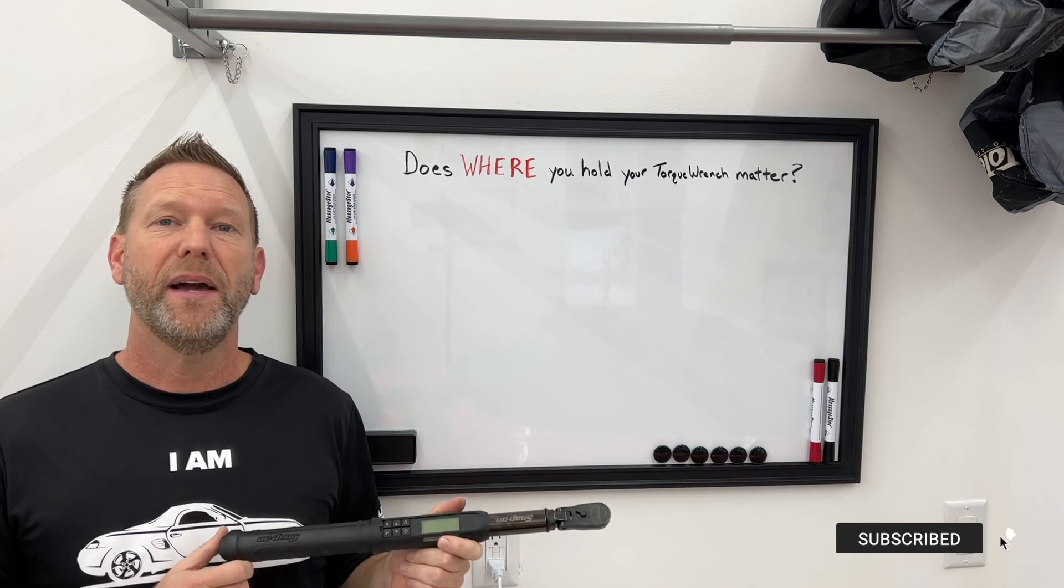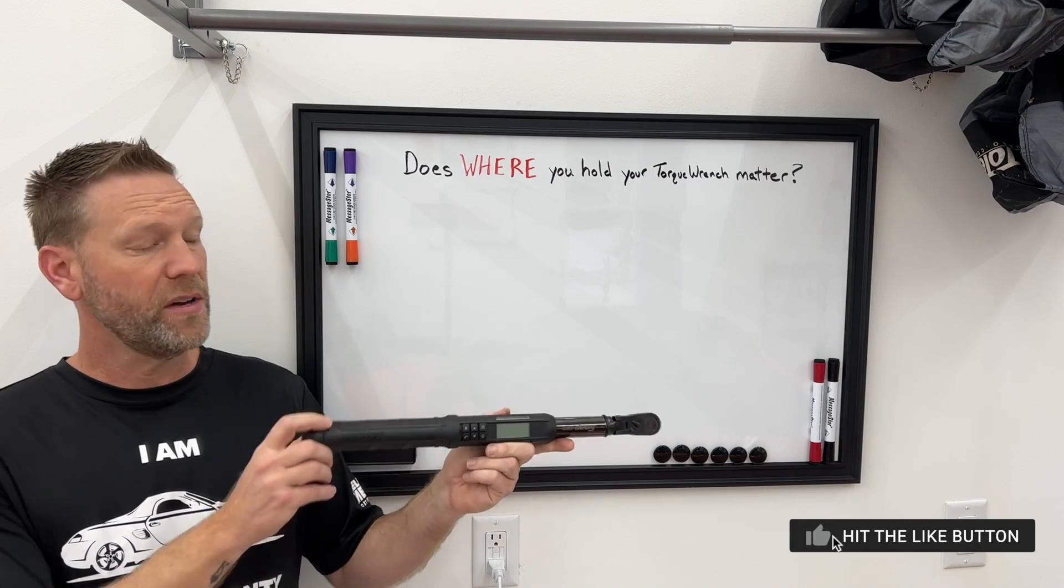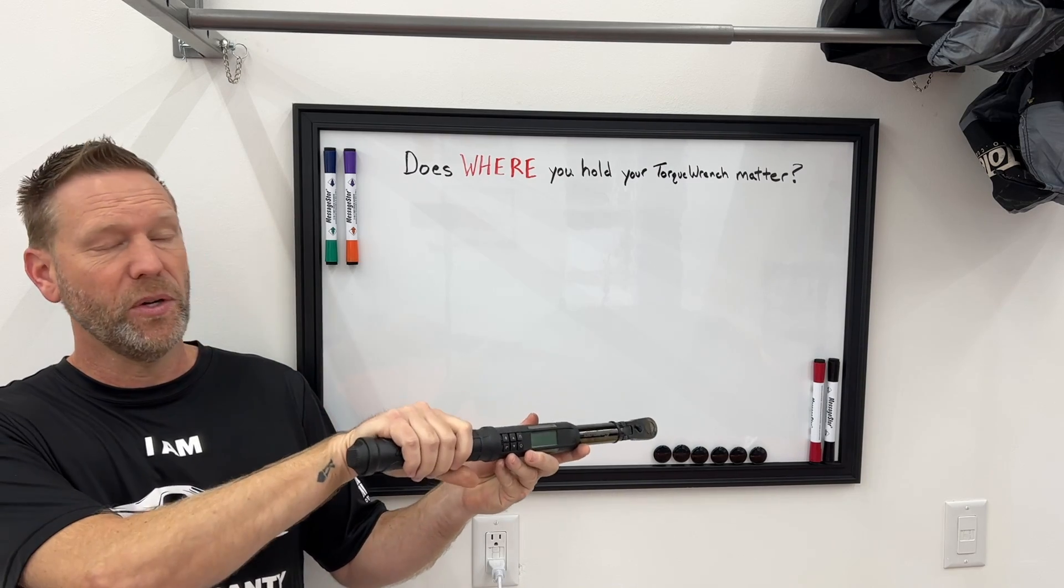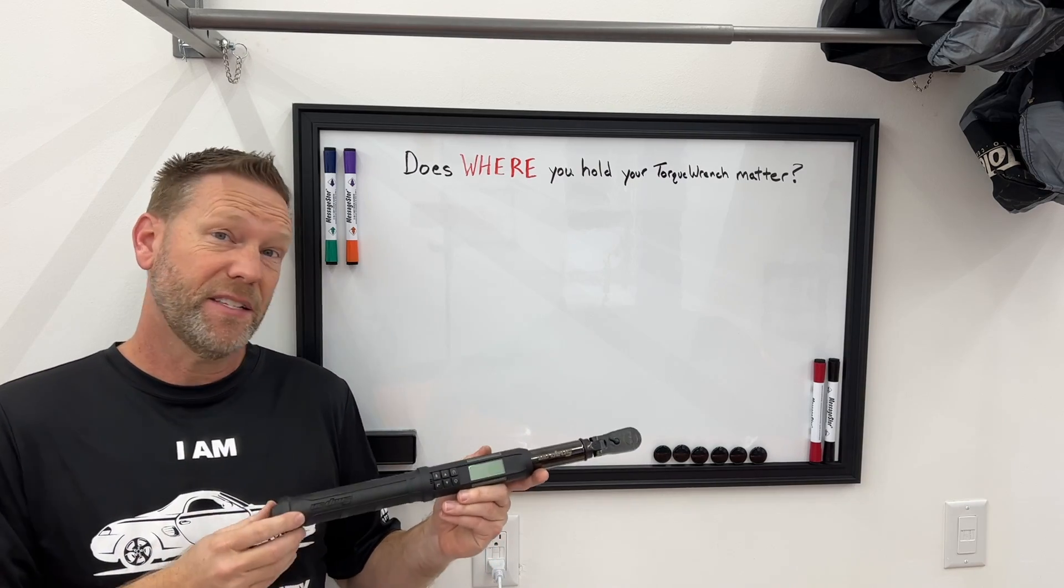I was using a torque wrench in one of my recent videos and somebody left a comment saying that I was doing it wrong, that I was holding it at the end of the torque wrench and that I should be holding it in the center of the handle. And that got me thinking, does it really matter?